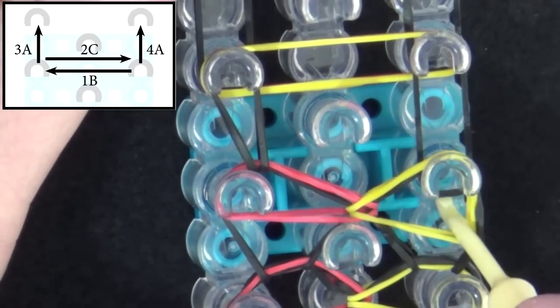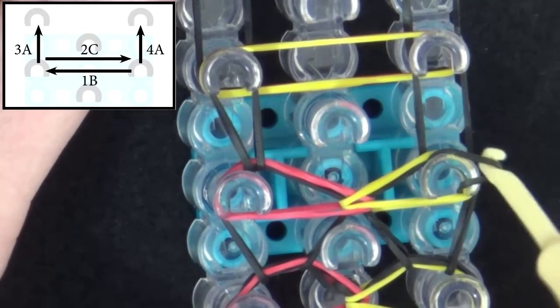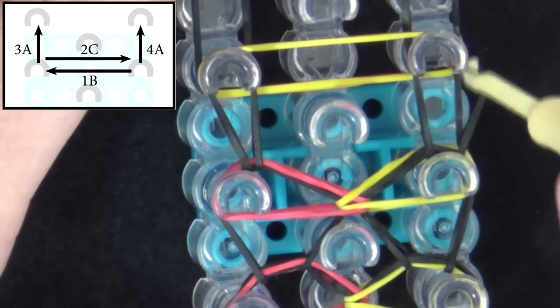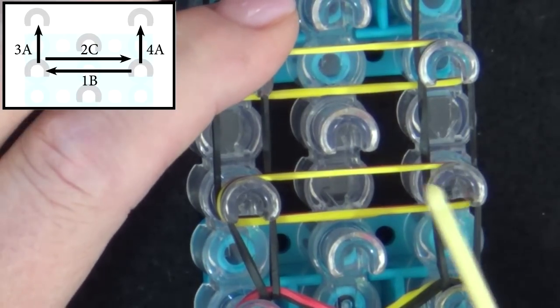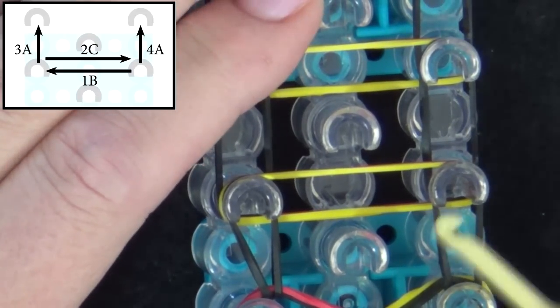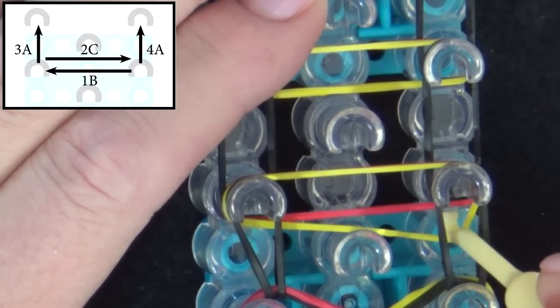Number four, we reach in here, get the A band, and pull it forward. Now we'll fast forward from here, and you can pause the video and refer to the graphic at the top of your screen.